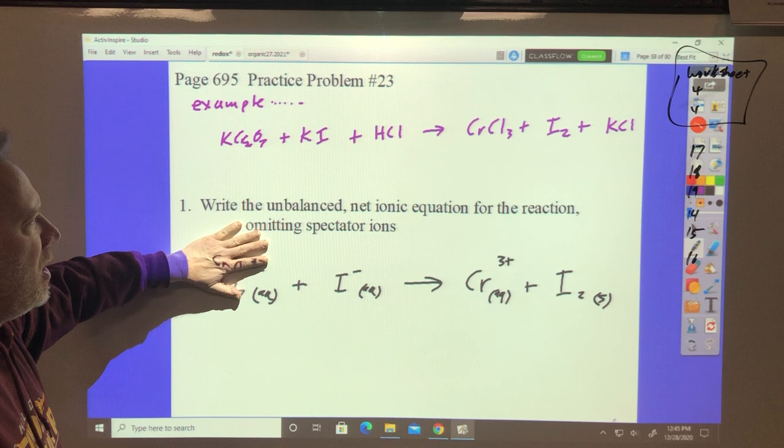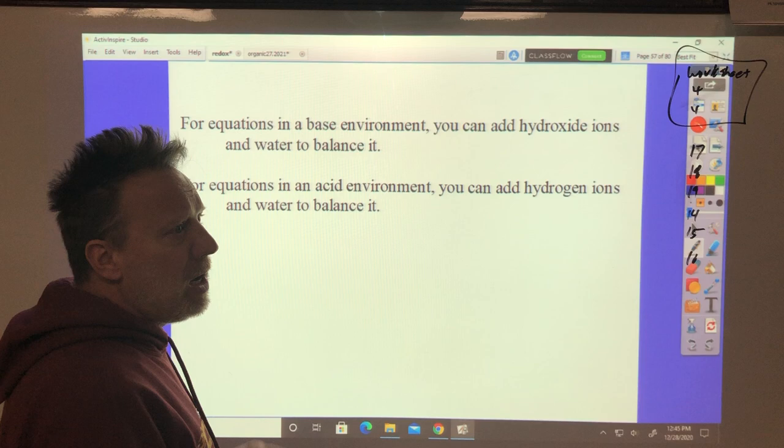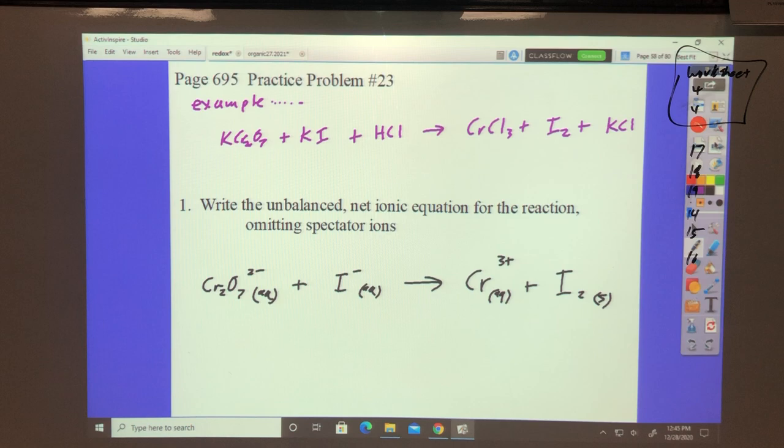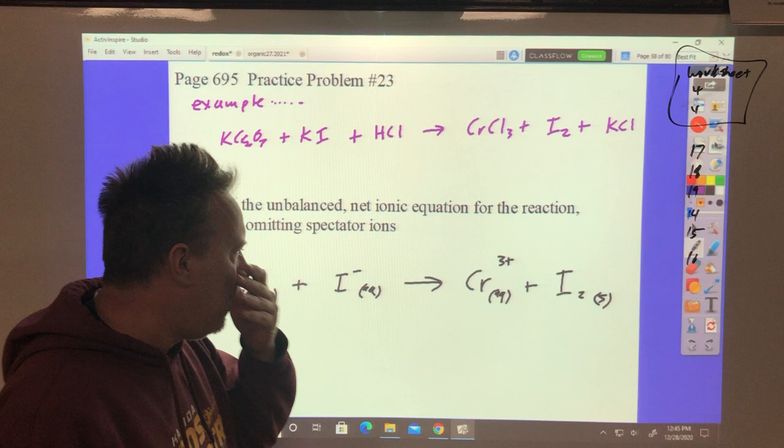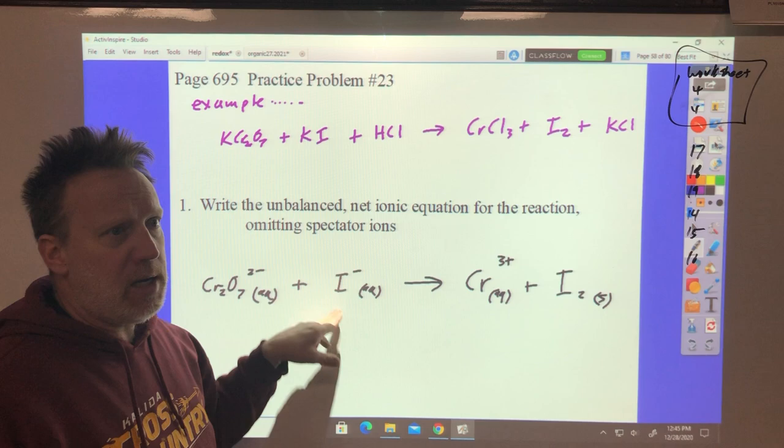This is in the presence of an acid, an acid environment, which means that when we've got to balance this redox reaction, we can add hydrogen ions to one side and water to the other to make it work. Would this work with potassium chromate and potassium iodide? Yes.